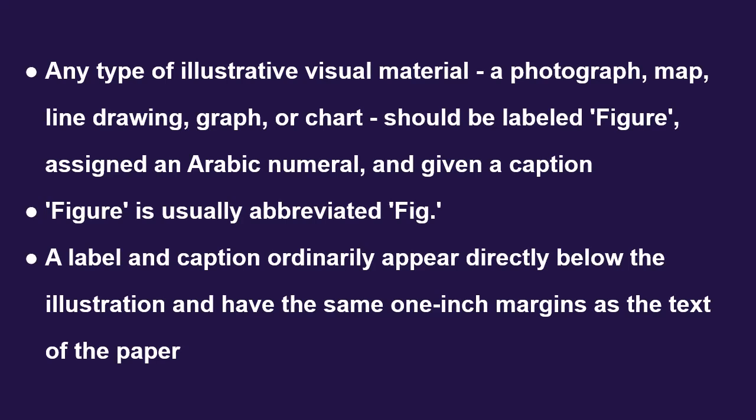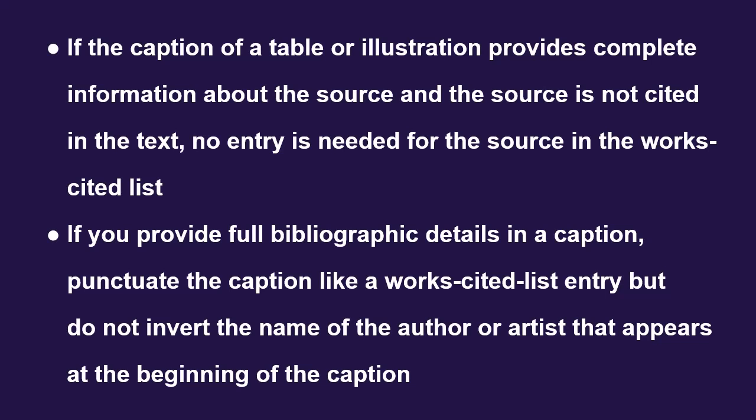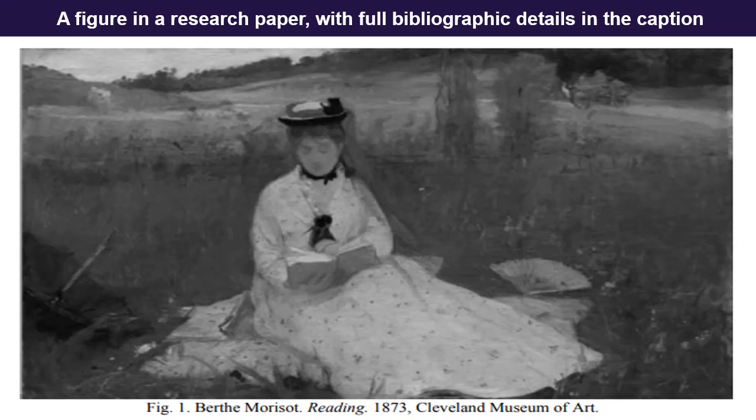Any type of illustrative visual material — for example, a photograph, map, line drawing, graph, or chart — should be labeled 'Figure,' assigned an Arabic numeral, and given a caption. Figure is usually abbreviated 'fig.' A label and caption ordinarily appear directly below the illustration and have the same one-inch margins as the text of the paper. If the caption of a table or illustration provides complete information about the source and the source is not cited in the text, no entry is needed for the source in the works cited list. If you provide full bibliographic details in a caption, punctuate the caption like a works cited list entry, but do not invert the name of the author or artist at the beginning of the caption. This picture is an example of a figure in a research paper with full bibliographic details in the caption.